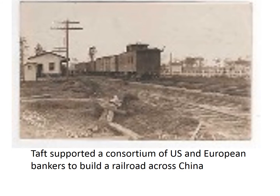Taft also worked to extend dollar diplomacy to Asia and supported the participation of American bankers in an international consortium of European bankers, which was to build a large railroad across central and southern China in 1911. The project never prospered, however, and when Woodrow Wilson took over in 1913, he forced the withdrawal of the American banking group.